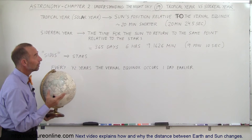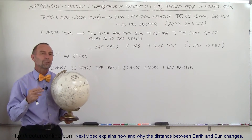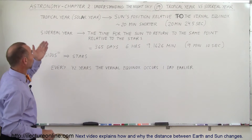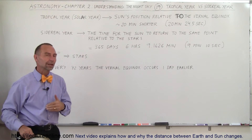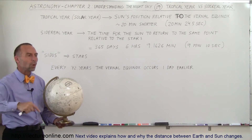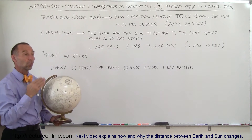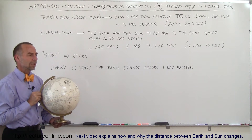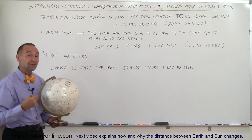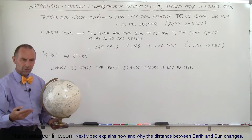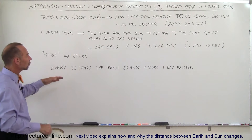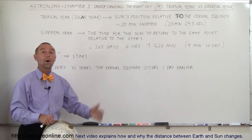It turns out that every year the vernal equinox is reached about 20 minutes sooner than a complete year, which means that a tropical year is actually 20 minutes shorter than a sidereal year — the amount of time it takes for the Earth to make one complete trip around the Sun relative to the stars. So if we hit the vernal equinox 20 minutes earlier every year, then every three years it would be an hour earlier, every 30 years it would be 10 hours earlier, and every 72 years the vernal equinox would occur one day earlier.